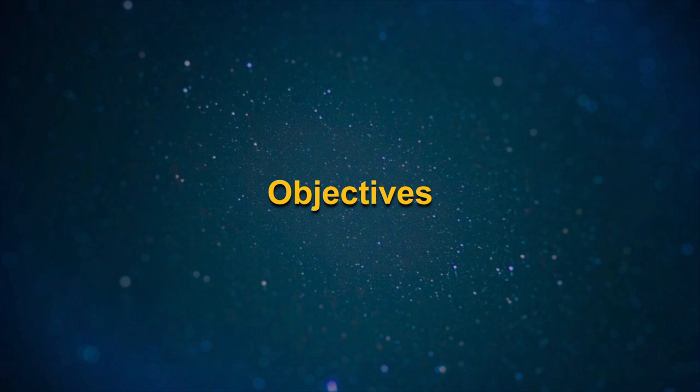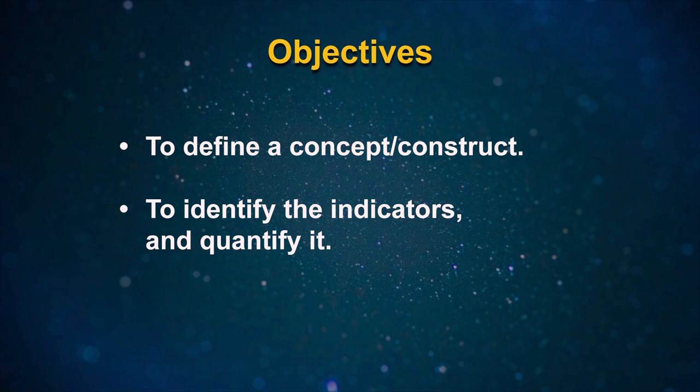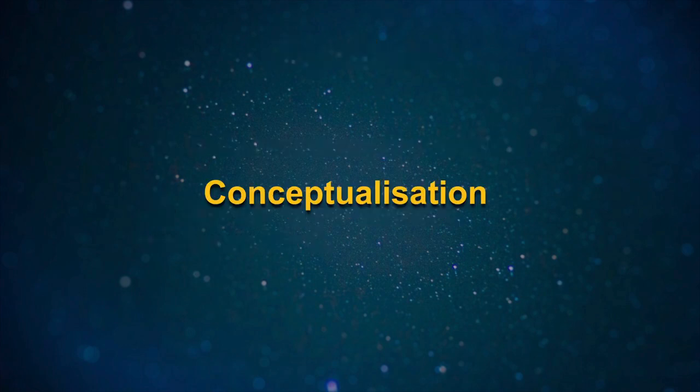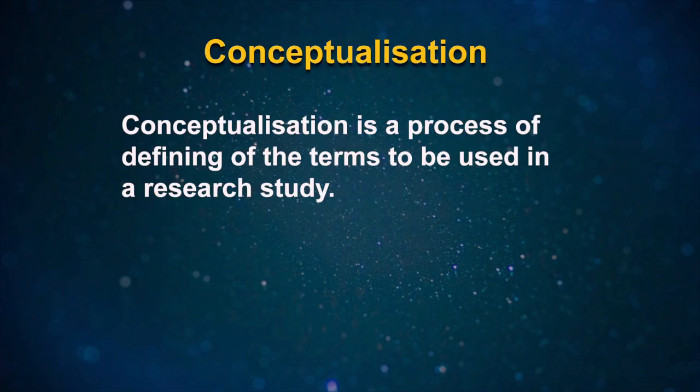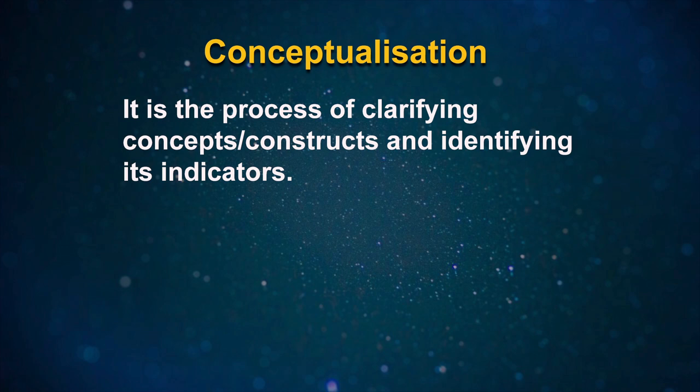The objectives of this lesson are: you would learn about how to define a concept and construct, and how to identify the indicators and quantify them. In a very broad sense, conceptualization is a process of defining the terms to be used in a research study. When we decide to study or measure a concept or construct, we need to define it precisely so that its meaning is understood and it becomes easy to collect data. In other words, it is the process of clarifying concepts, constructs, and identifying its indicators.